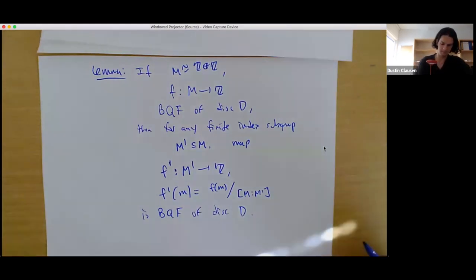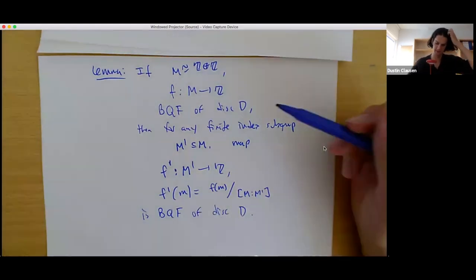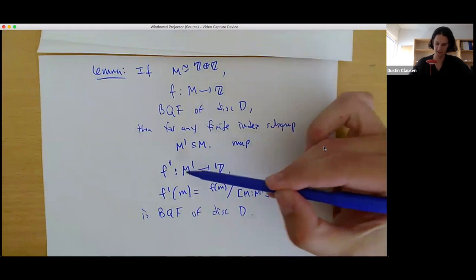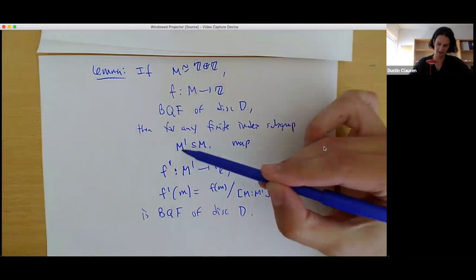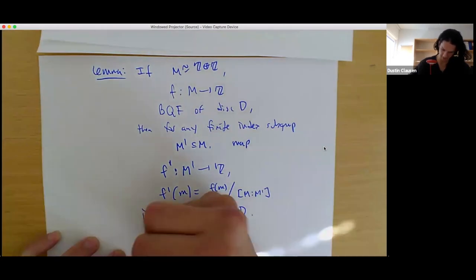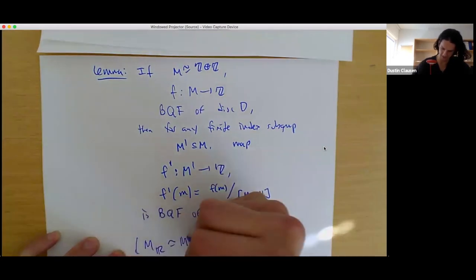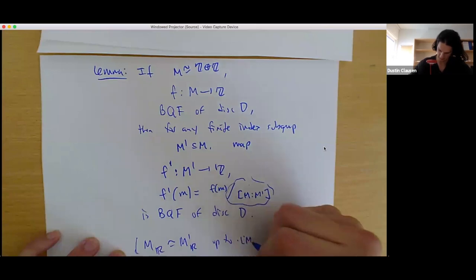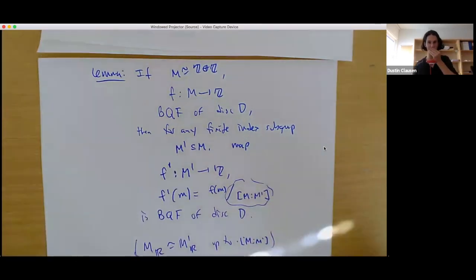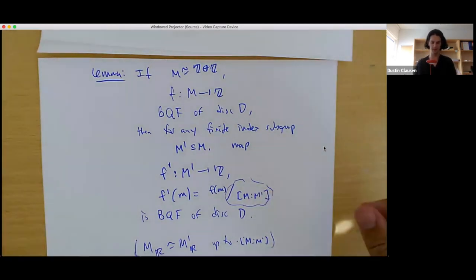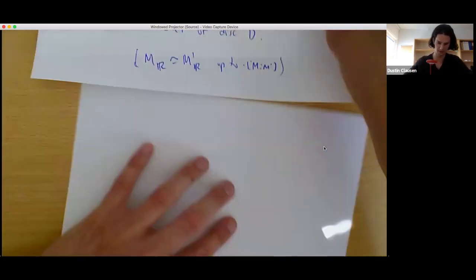The claim about being positive definite only depends on extending scalars to the real numbers. Since M and M' differ by finite index, when you extend scalars to the real numbers you get the same thing — M tensor R is isomorphic to M' tensor R up to a positive scalar constant. So the positive definite claim will be automatic. The real crucial part is the lemma saying that it's got the correct discriminant, which follows from two sub-claims.